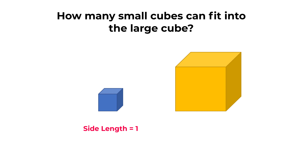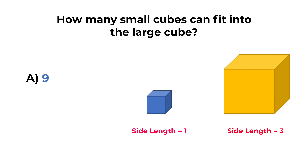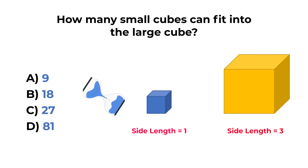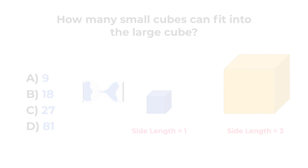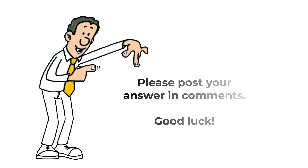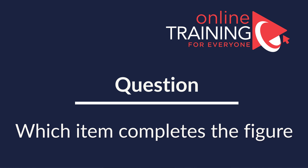Here's a practice problem: you're presented with two cubes — a smaller cube with side length 1 and a larger cube with side length 3. How many small cubes can fit into the large cube? Choices: A) 9, B) 18, C) 27, D) 81. Give yourself 10 to 30 seconds depending how good you are with visualization. Once you come up with the answer, post it in the comments. Thanks for participating and good luck.